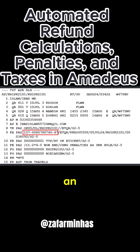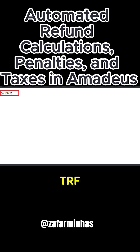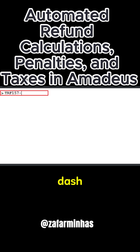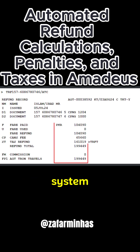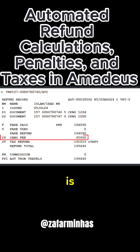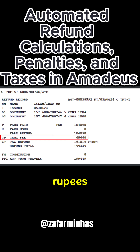To initiate an automated refund with ATC using the e-ticket number and display the refund record, follow these steps: Use the TRF transaction to begin the refund. Enter the prefix number 157 for Qatar Airways, followed by a dash and the 10-digit ticket number, then another slash followed by the ATC refund indicator. Press Enter. The system performs an automated calculation, and the cancellation penalty amount for a no-show is 65,660 Pakistani rupees.